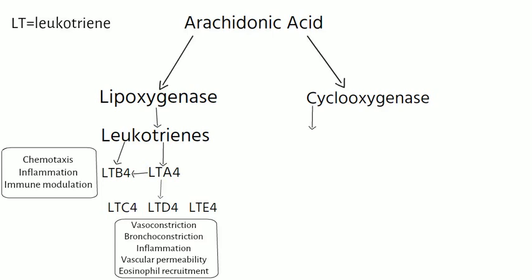Arachidonic acid can be metabolized via the COX-1 pathway or by the COX-2 pathway. The COX-1 pathway controls a number of processes that help maintain homeostasis and thus are constitutively expressed, meaning COX-1 products are made at relatively constant levels.